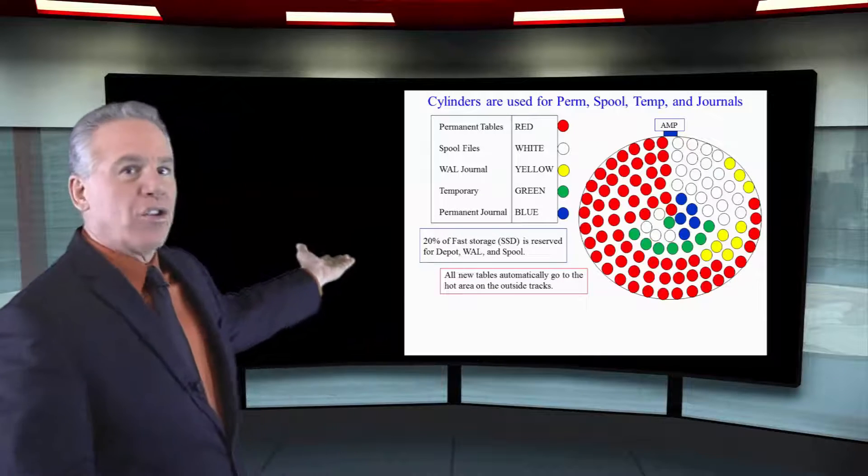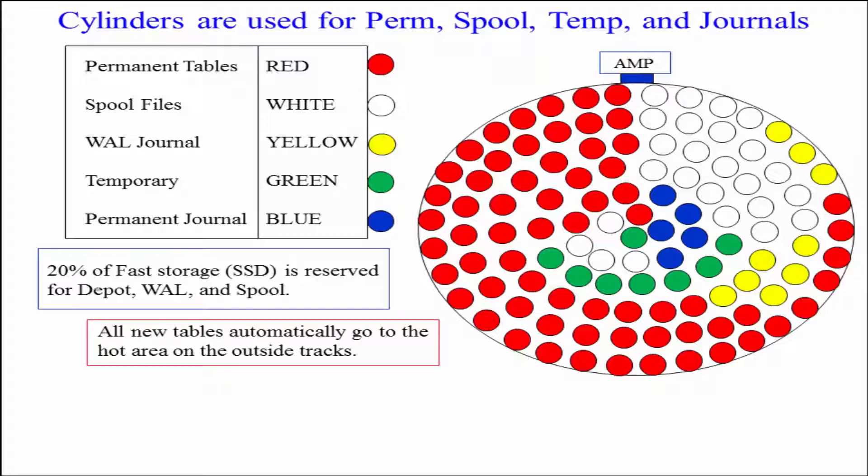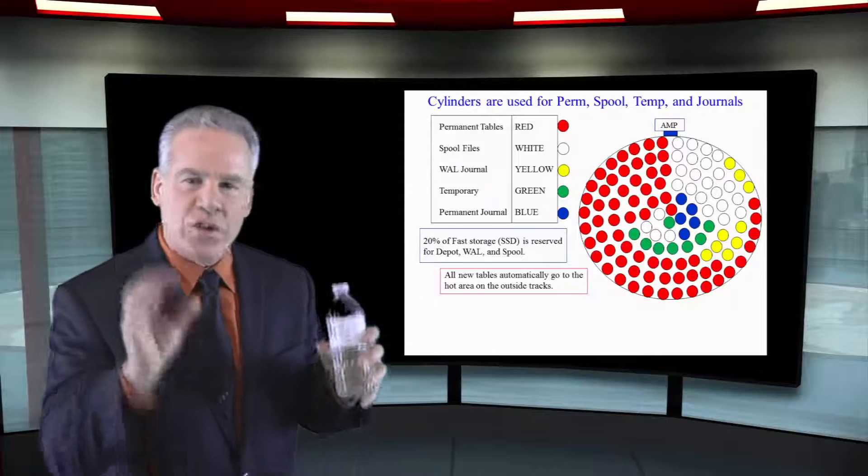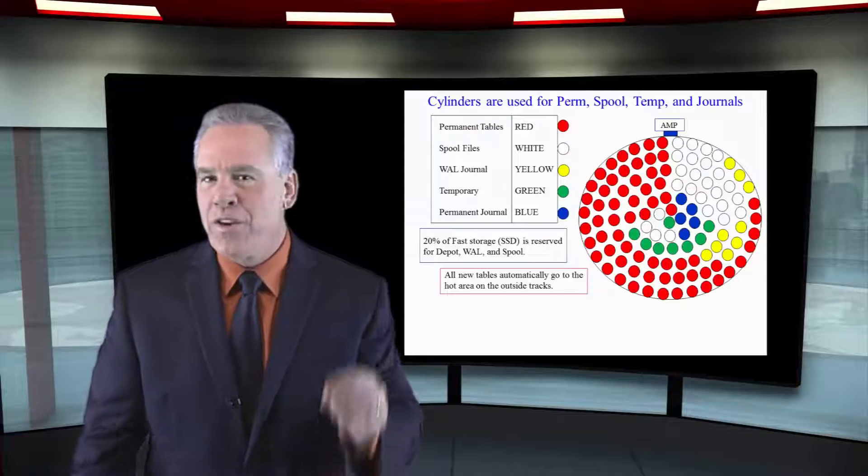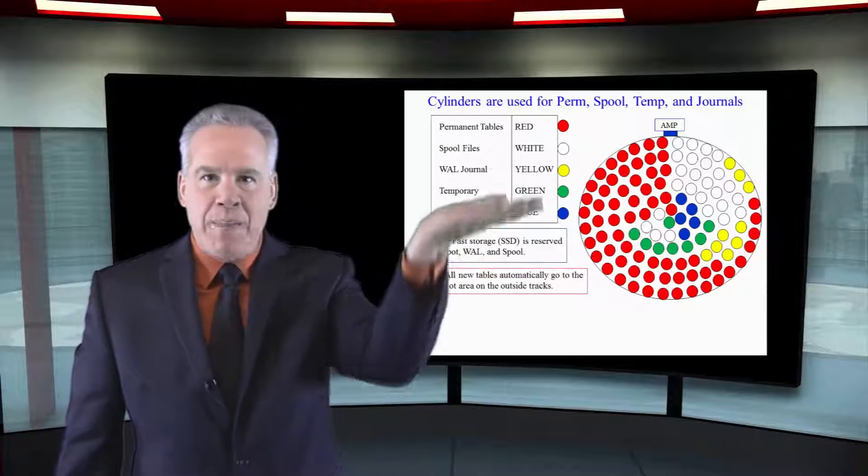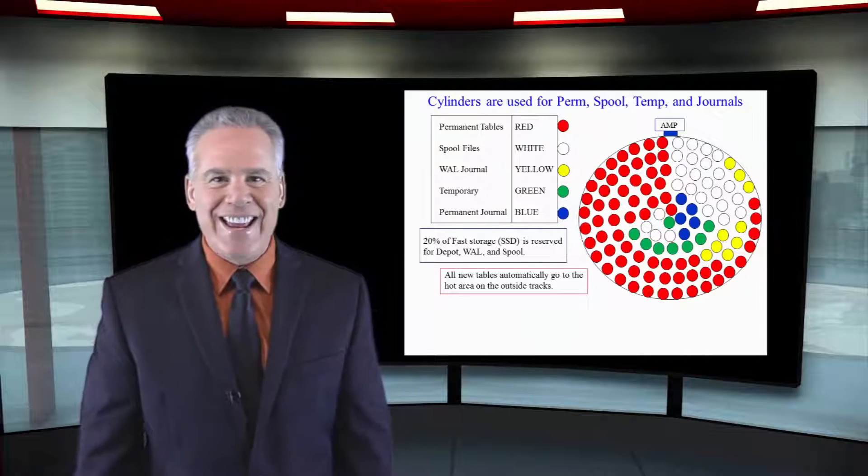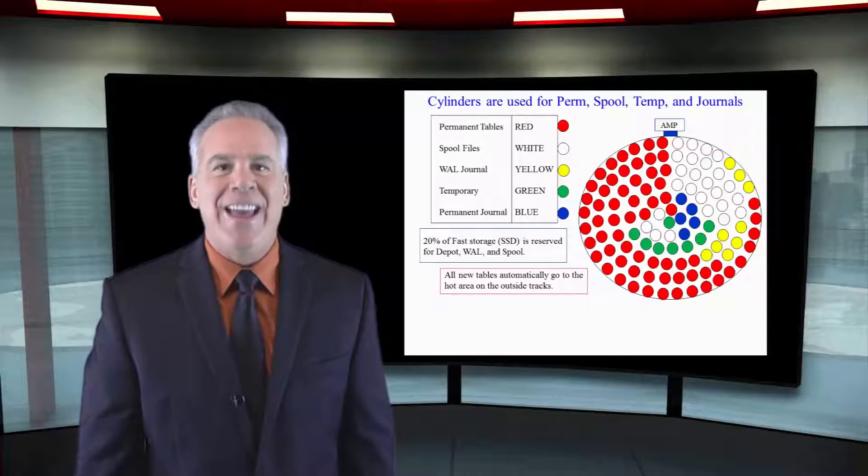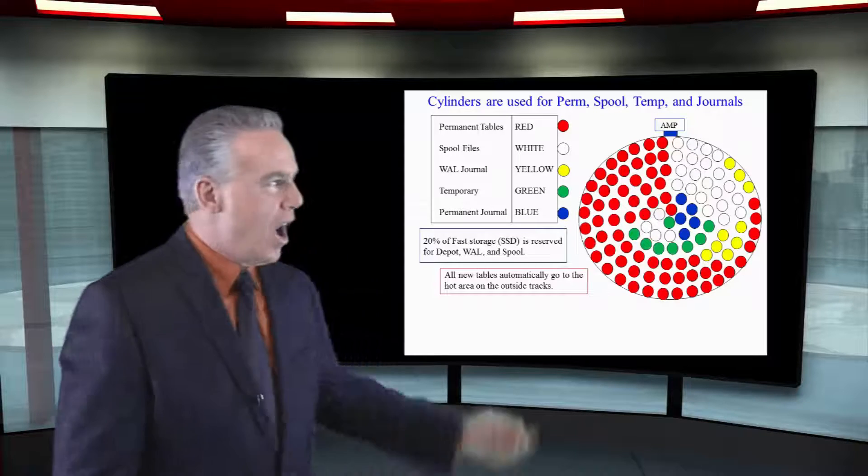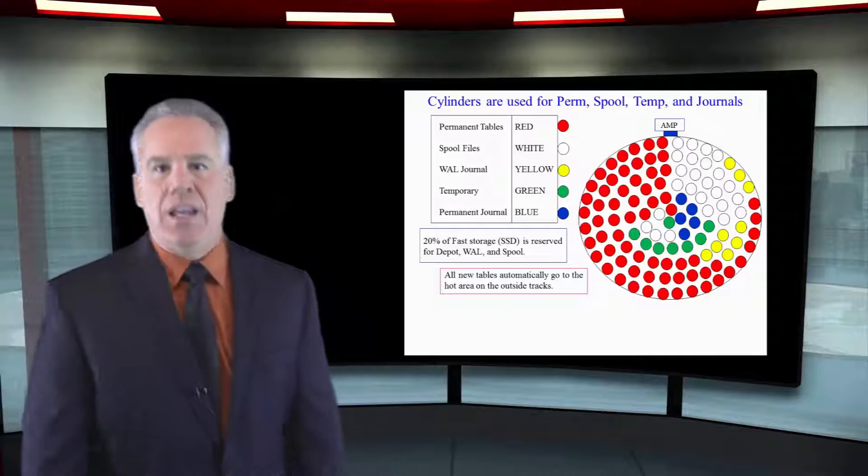As you can see here there's actually cylinders for perm space, spool space, temp space, any journaling that's going on at all, and permanent journals so that you can have backups and restore. That's what's so clever about what Teradata is able to do here. They're very organized. They have the master index to know what data is in what cylinders and they can track this thing like it's got sonar. And that's the brilliance of the organization on these disks in these cylinders.